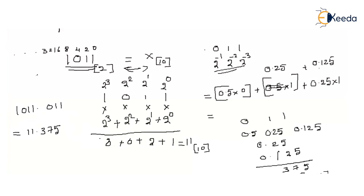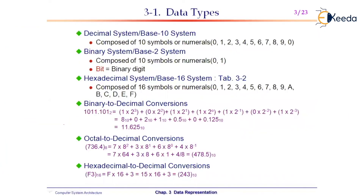This is how we convert a binary number to decimal. Now let us convert an octal number to the decimal number system. When converting any number system, each digit has its respective weight. For example, take 736 in octal.